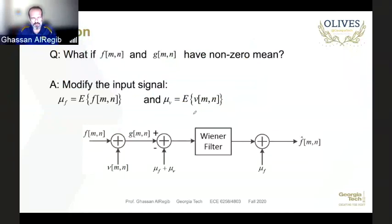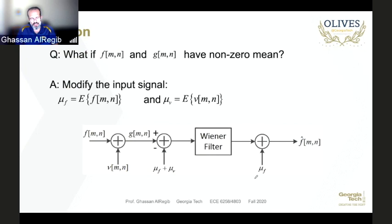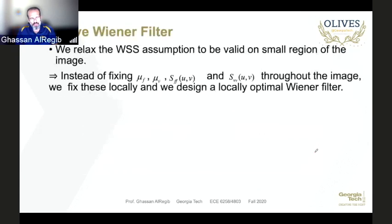Remember at the problem setup we assumed f and g have zero mean. If that's not the case, you subtract the means first, apply the filter, and then bring the mean of the signal back after filtering to get your estimate f-hat.